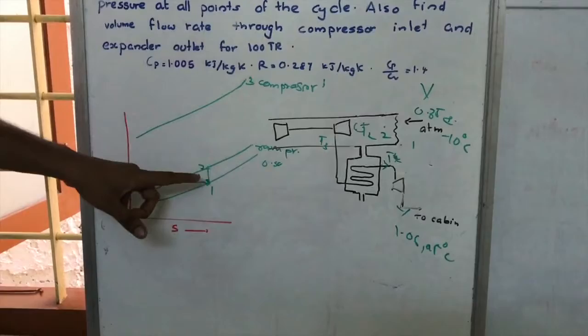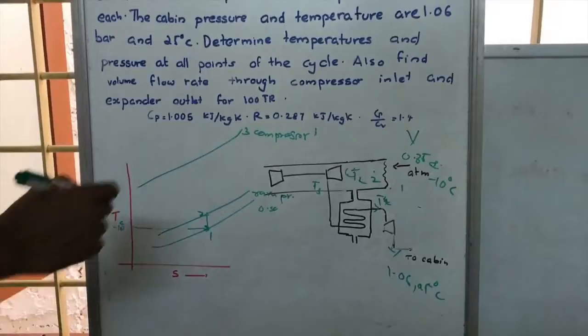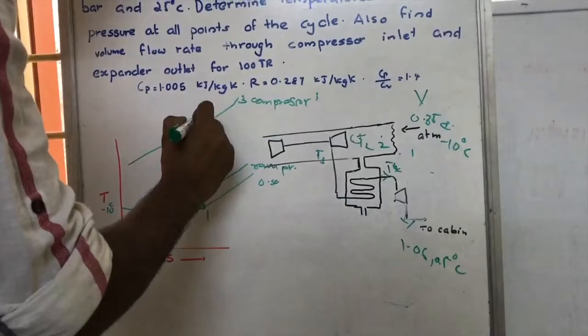This is Point 3 on the T-S diagram. The ideal compression process is shown from Point 2 to Point 3. However, since an isentropic efficiency of 0.8 is given, more work must be supplied than in the ideal case.